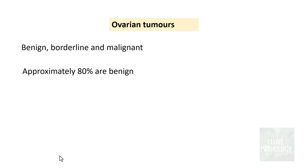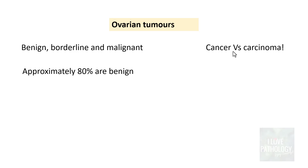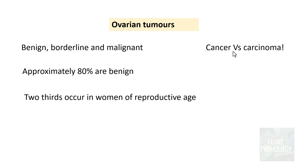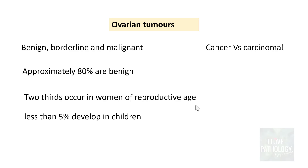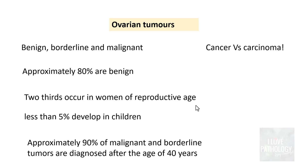Approximately 80% of ovarian tumors are benign. Regarding malignant tumors, 'cancer' is a generalized term covering both epithelial and mesenchymal origins, while 'carcinoma' specifically means epithelial origin. Two thirds of ovarian tumors occur in women of reproductive age — around 20 to 45 years — and less than 5% develop in children. About 90% of malignant and borderline tumors are diagnosed after the age of 40 years.